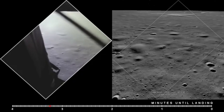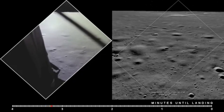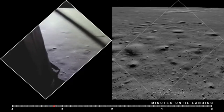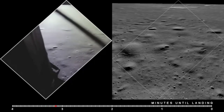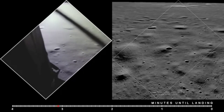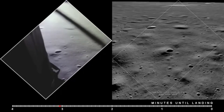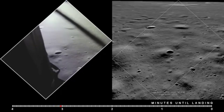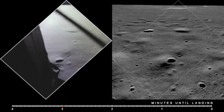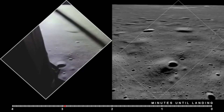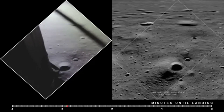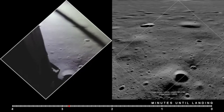2,000 feet. Into the egg, 47 degrees. Eagle looking great, your go. Altitude 1,600. 1,400 feet, still looking very good.